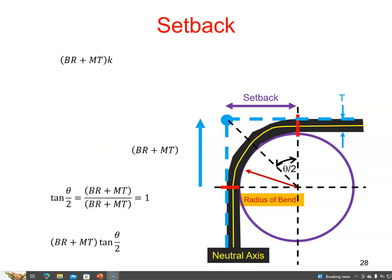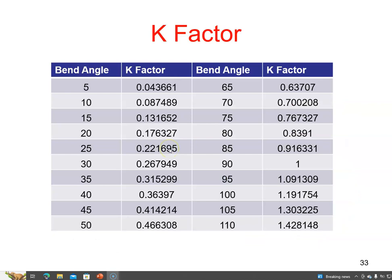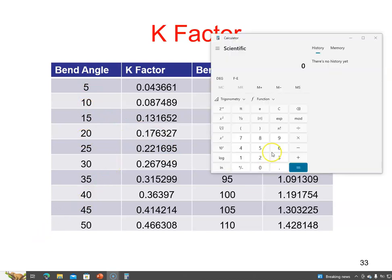That can be substantiated by looking at some tables. I got this table from Dill Crane's Aviation Maintenance Handbook, fifth edition. It gives the bend angle and what the K factor is. If I look them up on a calculator...